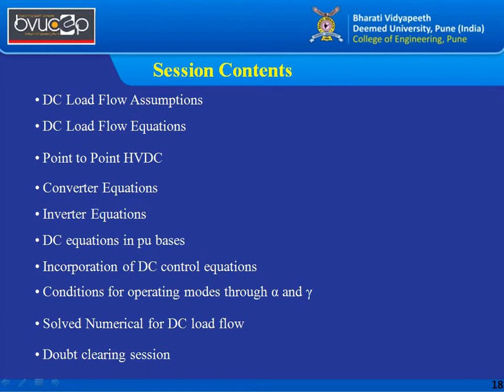For point-to-point HVDC we are going to consider the variables at various points throughout the system. Then we are going to see converter equations, inverter equations, and how to convert the DC equations into per unit basis so that they are compatible with the AC system. We will also cover the incorporation of DC control equations — if certain parameters are given, how to calculate the unknown parameters.